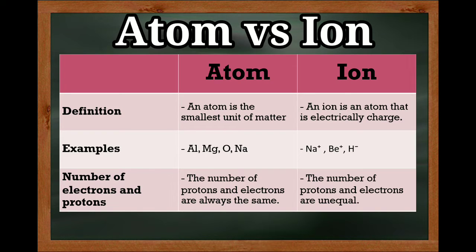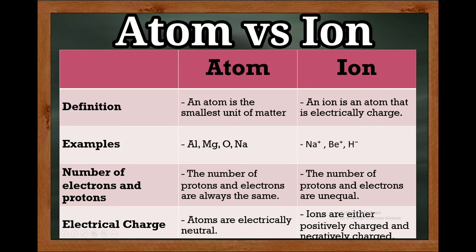The number of protons and electrons are always the same in an atom. The number of protons and electrons are unequal in an ion — sometimes it loses electrons and sometimes it gains electrons. In terms of electrical charge, atoms are electrically neutral, while ions are either positively or negatively charged, because an atom can either lose or gain electrons.